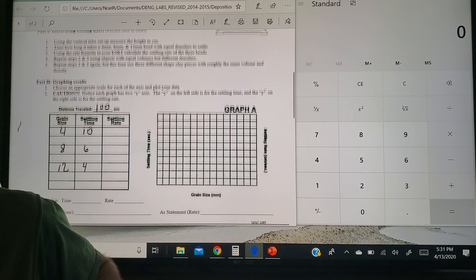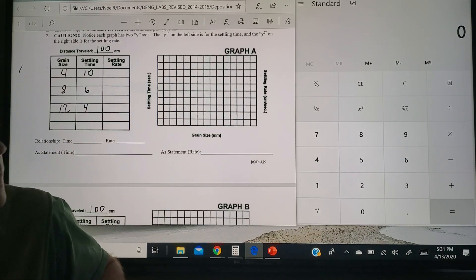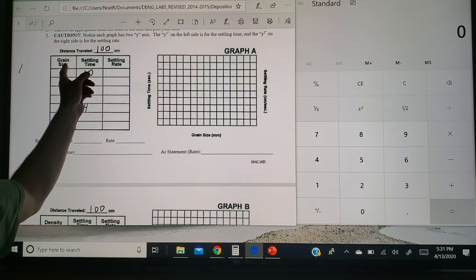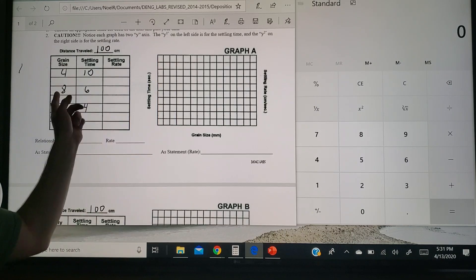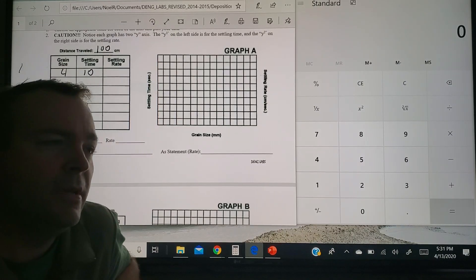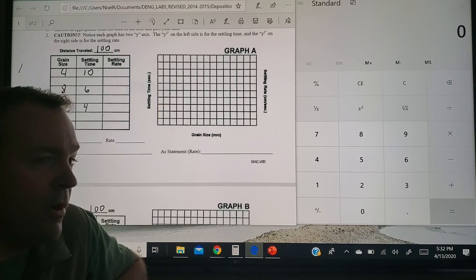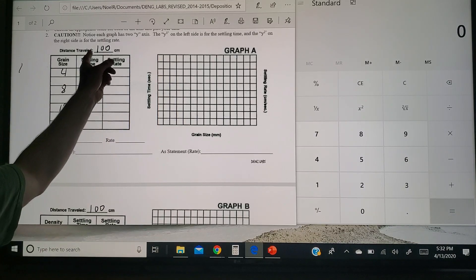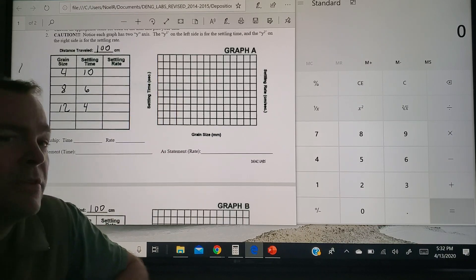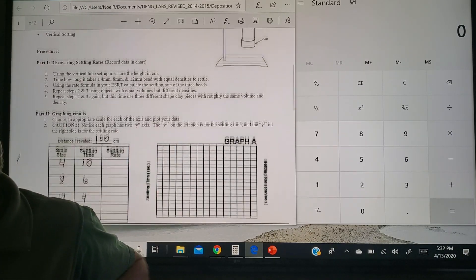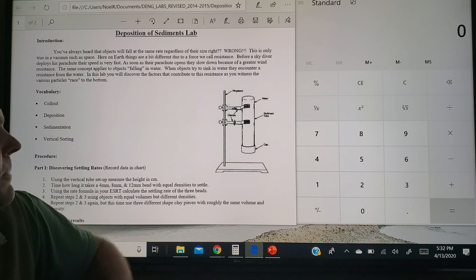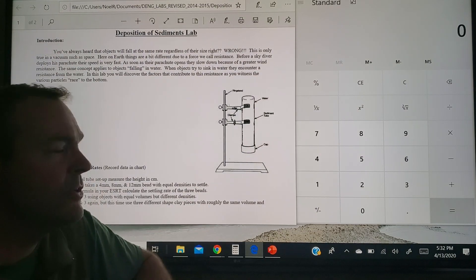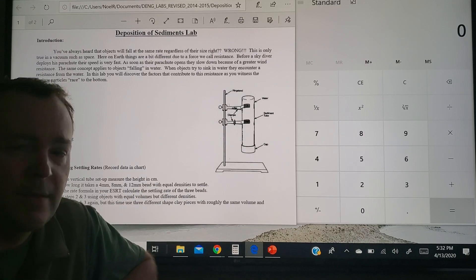Alright, so for the first part, it's talking about, in this case, size. You'll see there's 4, 8, and 12, that's talking about size of the particle dropped, 4, 8, and 12 millimeters. The distance traveled is always the same, 100 centimeters, because the tube that we're dropping it in was always the same, and the one in class is about 100 centimeters, so that distance will remain constant.